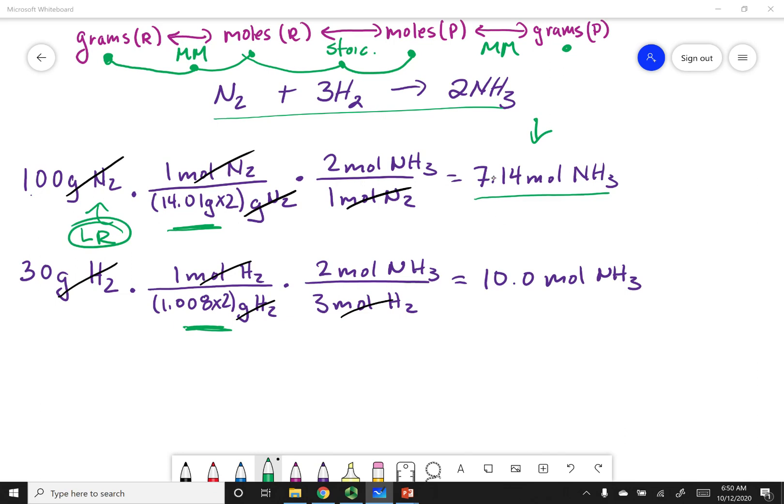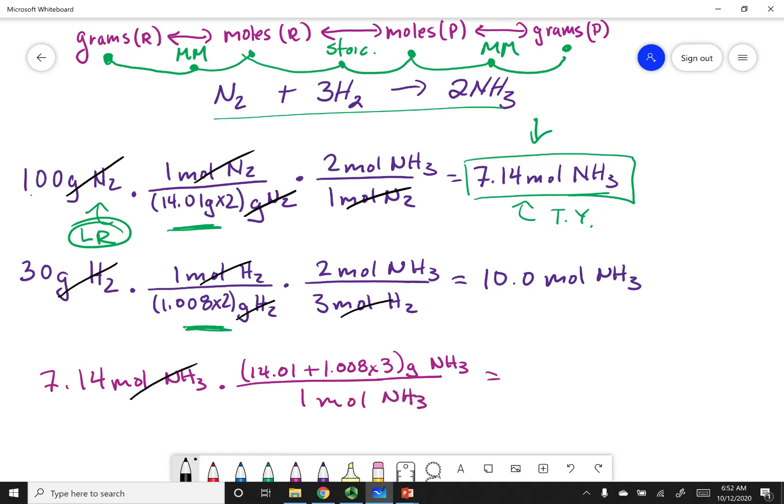The 7.14 moles of NH3, that is my theoretical yield in terms of moles. The question asks for the theoretical yield in terms of grams, so I'm going to use the molar mass to turn moles into grams. 7.14 moles of NH3, using the molar mass of 14.01 plus 1.008 times 3 grams per mole, gives me 121.4 grams of NH3. That gets us the theoretical yield in terms of grams.